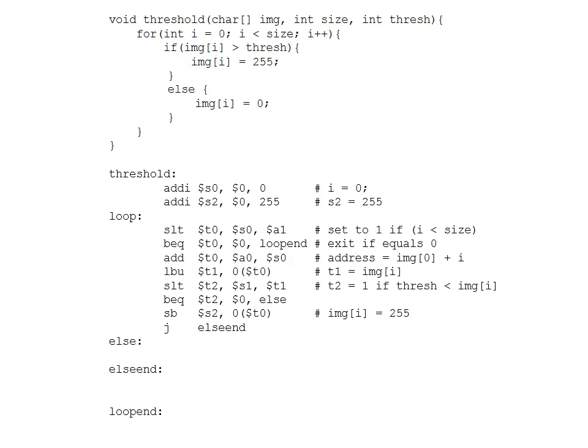Now we get to the else clause. In the else clause, we simply want to store zero into the ith entry of the image. This is another store-byte, but this time storing zero into that same address. With that, we've taken care of both the if and the else.